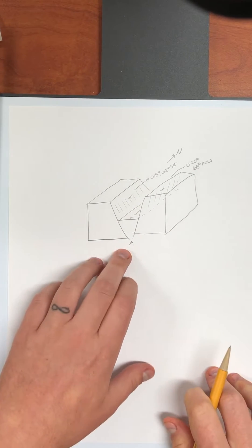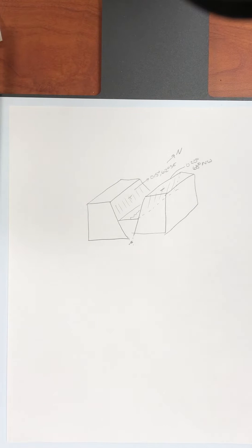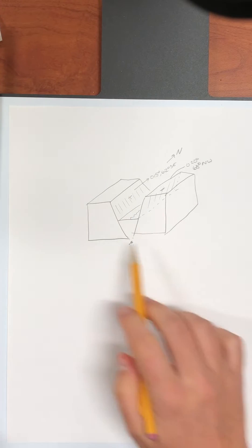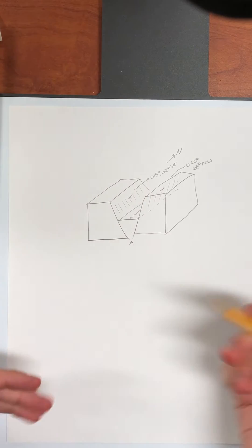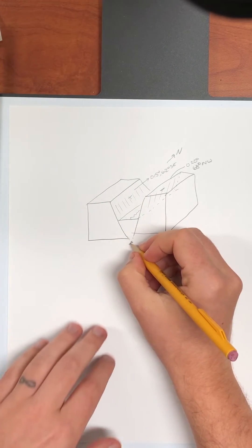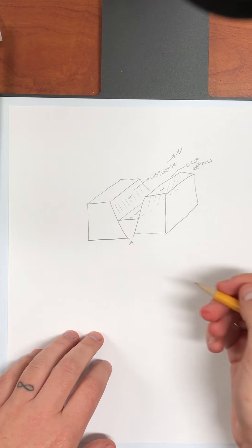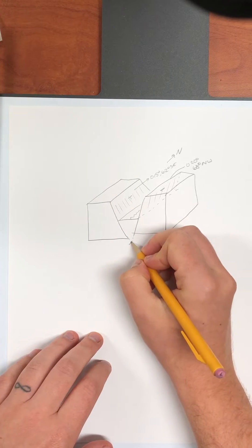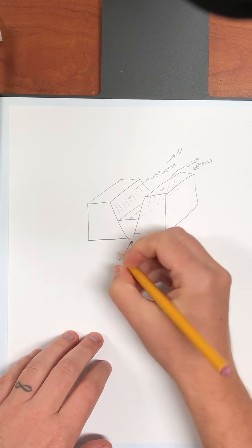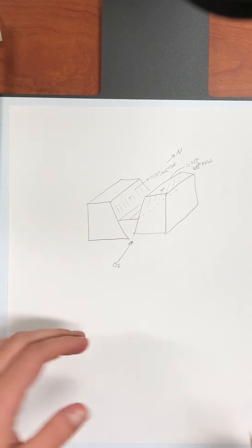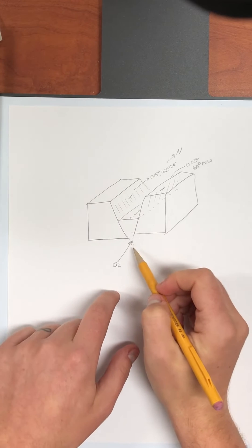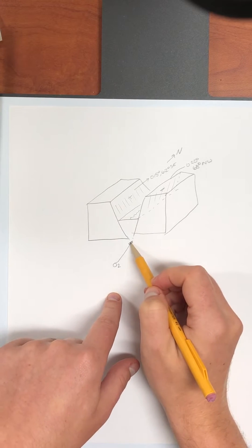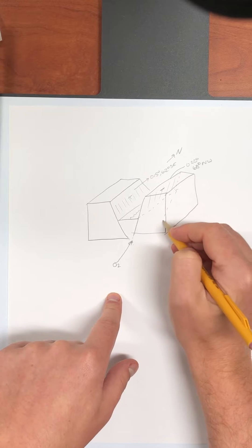Okay and we can draw in our principal stresses. So first off if we're dealing with a system like this where we've got two faults that are intersecting forming a conjugate system, the principal stress that lies in both planes of those faults is sigma 2.